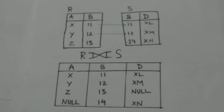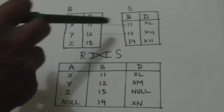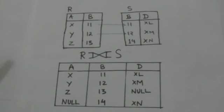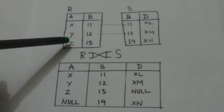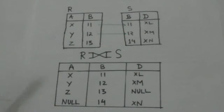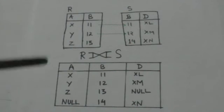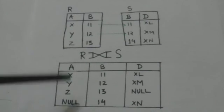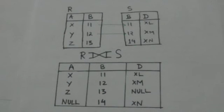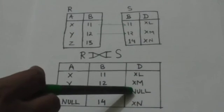Now see this tuple of relation R — it doesn't have any matching tuple in relation S. It is also present in the resulting relation, and the attributes of relation S are paired with null values in the resulting relation.